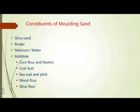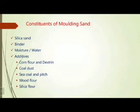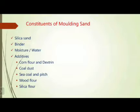We have a total of 5 classifications of additives. Generally, in industries, these additives are added: the first is corn flour and dextrin, the second is gold dust, the third is sea coal and pitch, the fourth is wood flour, and the fifth is silica flour. These 5 different additives are added to attain the properties for the molding sand.